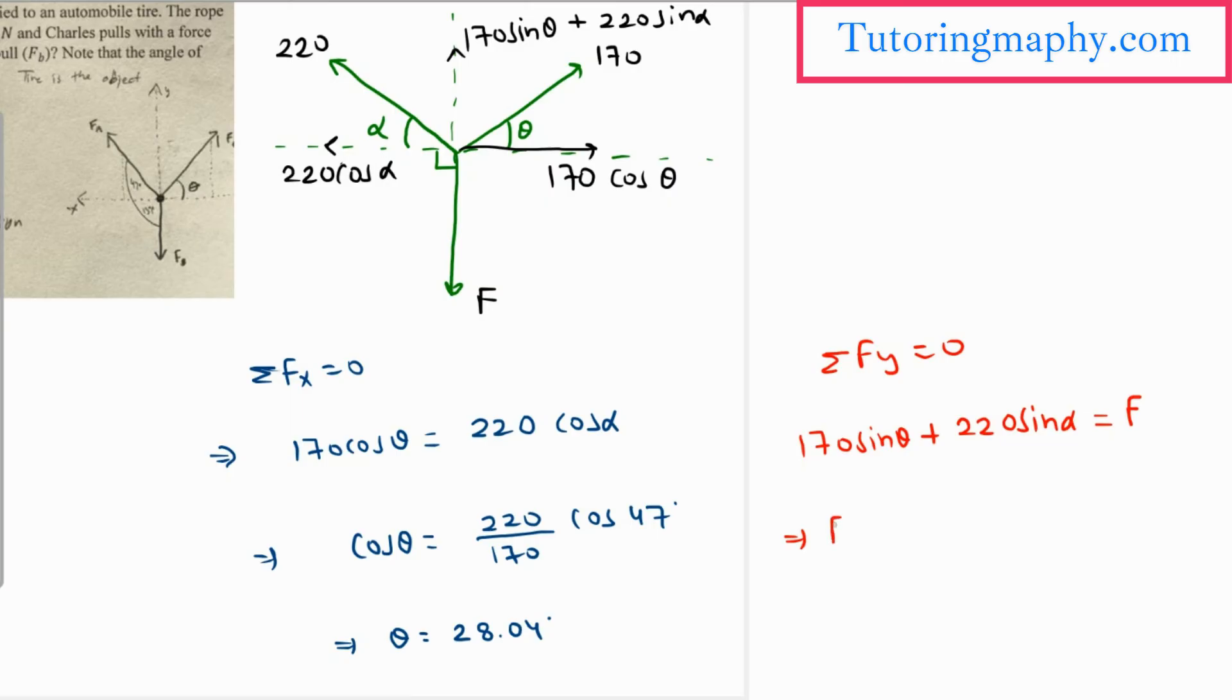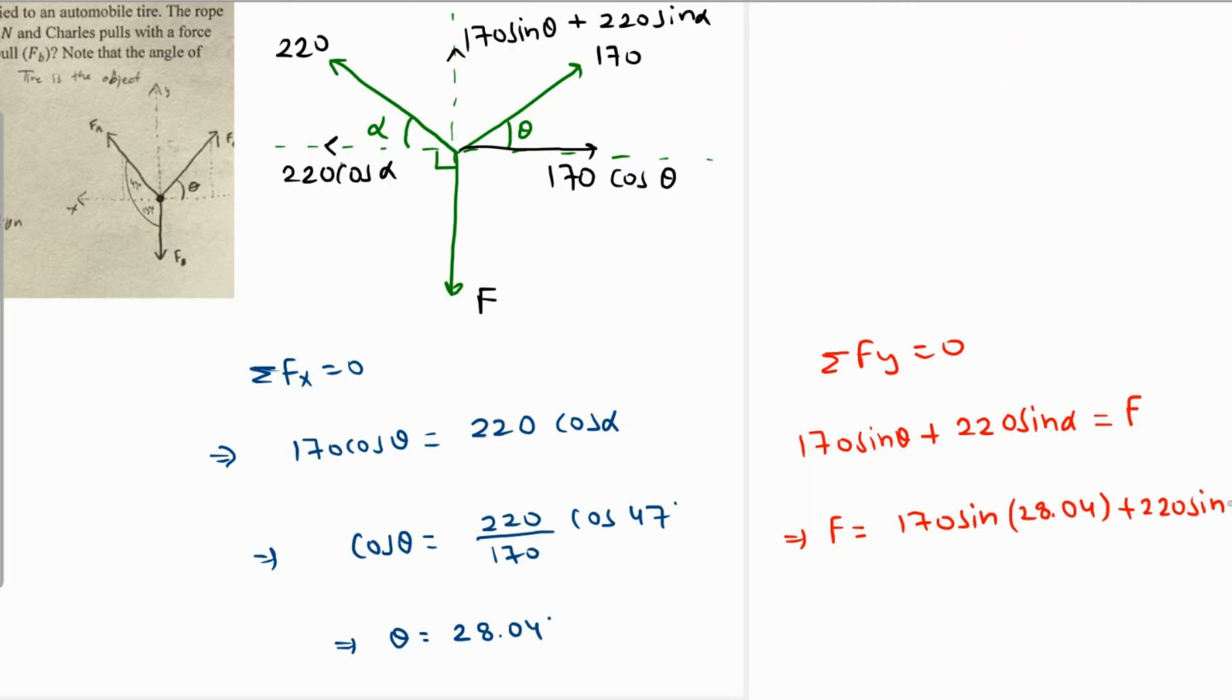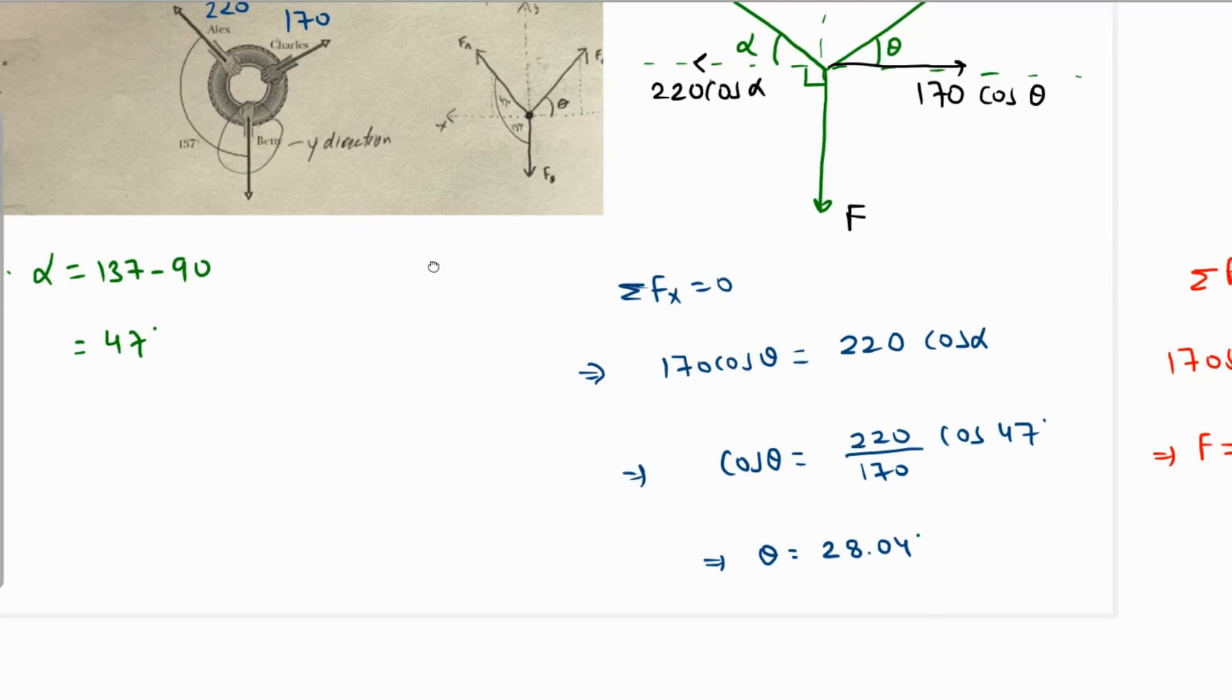If you flip the equation, then F will be equal to 170 sine of theta, where theta is 28.04, plus 220 sine of alpha, where alpha is 47 degrees.